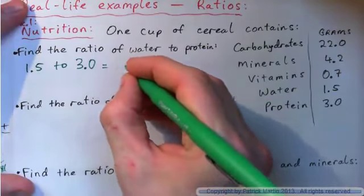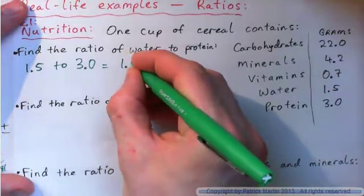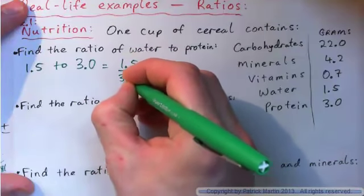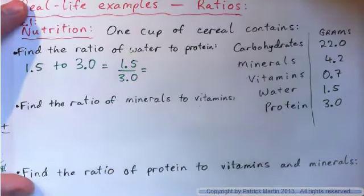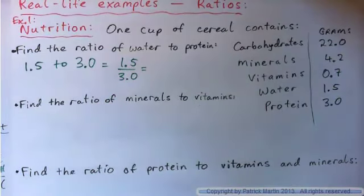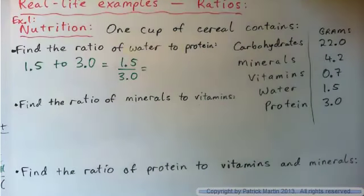That can be written as a fraction, 1.5 over 3.0. And because the top and bottom have one decimal place, I would advise you to multiply the top and bottom by something so that we can move that decimal place over.